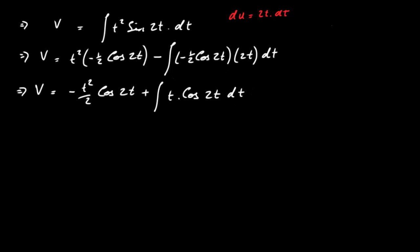We need to integrate ∫t cos(2t) dt by parts again. Let u = t, so du = dt. Let dv = cos(2t) dt. Integrating cos(2t) gives sine, but accounting for the chain rule factor: v = ½ sin(2t).